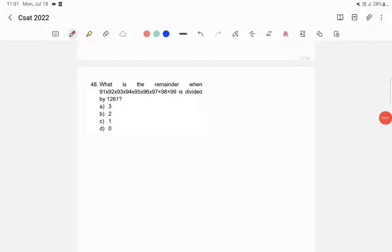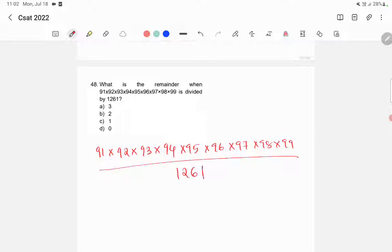What is the remainder when 91 × 92 × 93 etc. etc. × 99 is divided by 1261? So 91 into 92 into 93 into 94 into 95 into 96 into 97 into 98 into 99 divided by 1261.